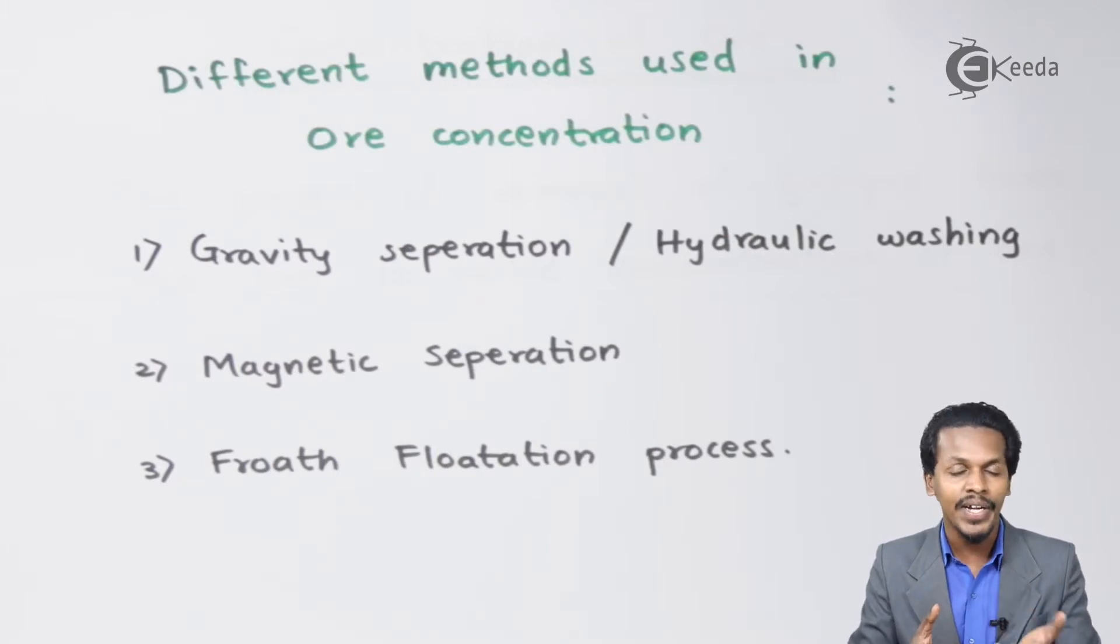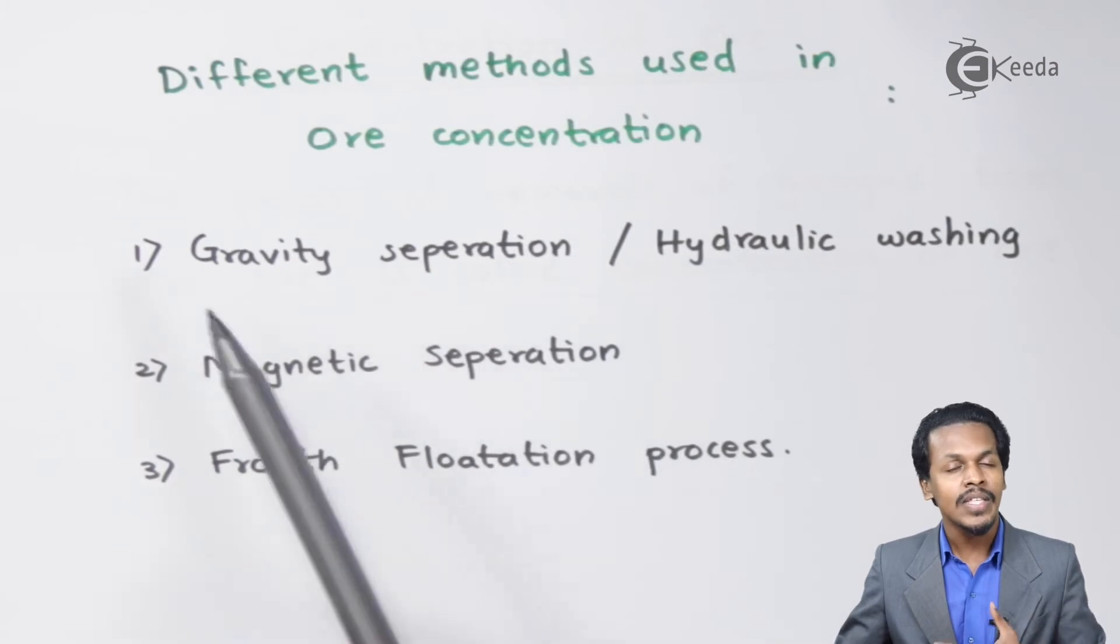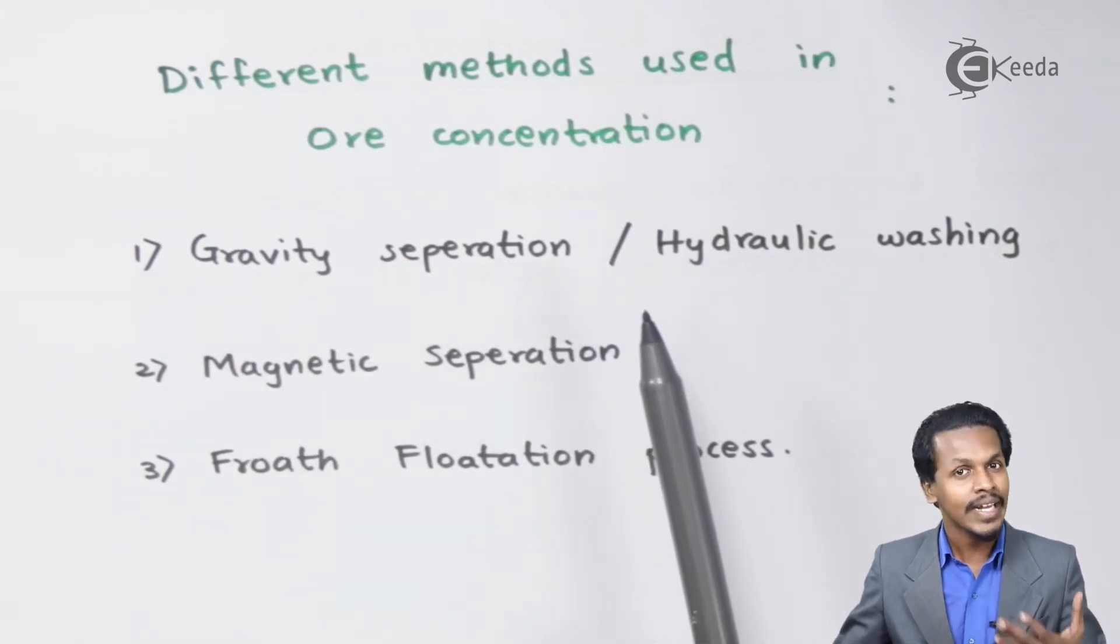In that case, the remaining part that is left out is ore. And that ore will consist of less impurity and more metal. This is what gravity separation is. I will discuss this in deep detail in my next lecture.